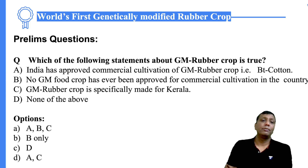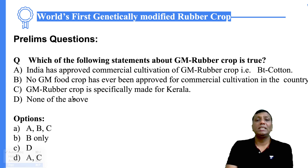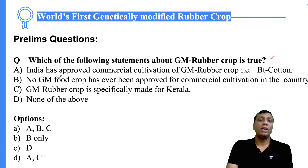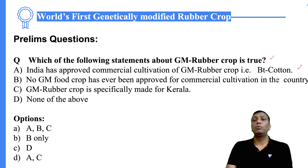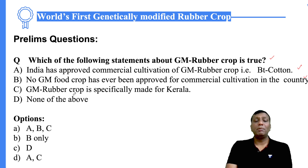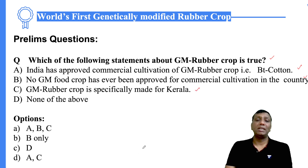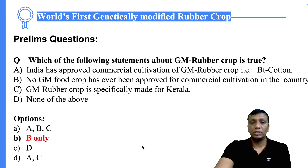Here is a question for all of you: Which of the following statements about the GM rubber crop is true? (1) India has approved the commercial cultivation of GM rubber crop, like Bt cotton. (2) No GM food crop has ever been approved for commercial cultivation in the country. (3) GM rubber crop is specially made for Kerala. (4) None of the above. Give your answer in the comment box.